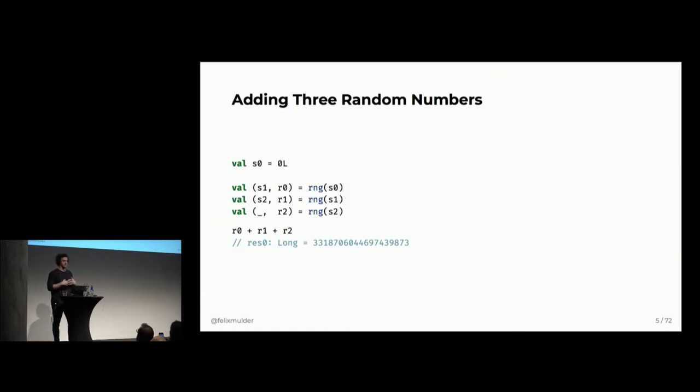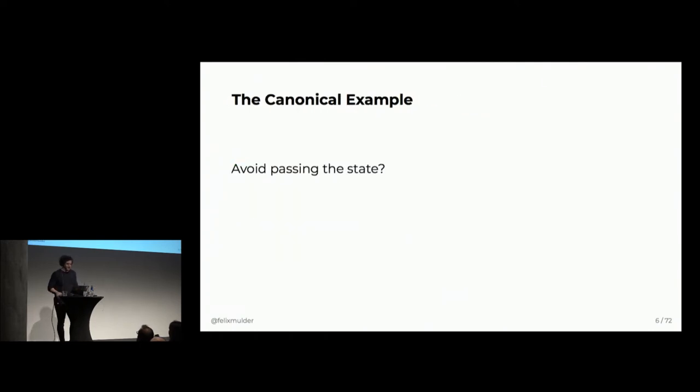But, let's take a simple example of adding three random numbers together. So, you start off with some initial seed S0 up there. And then you have to thread through the state everywhere that you want to generate a new random number. So, if you forget to do this, you're going to be reusing probably an old seed and you will not get a random number. So, this seems like a lot of ceremony in order to be able to do something as simple as just adding three random numbers together. And, yeah, also these slides are compiled so hopefully there's not too much hand waving going on.